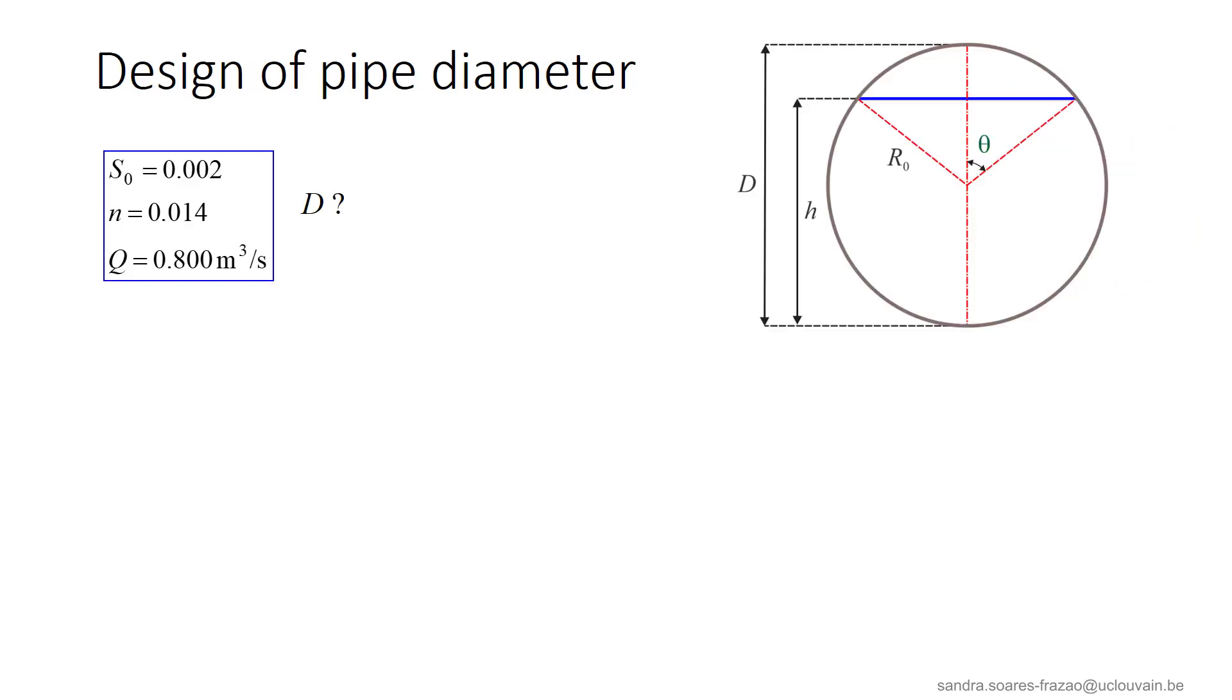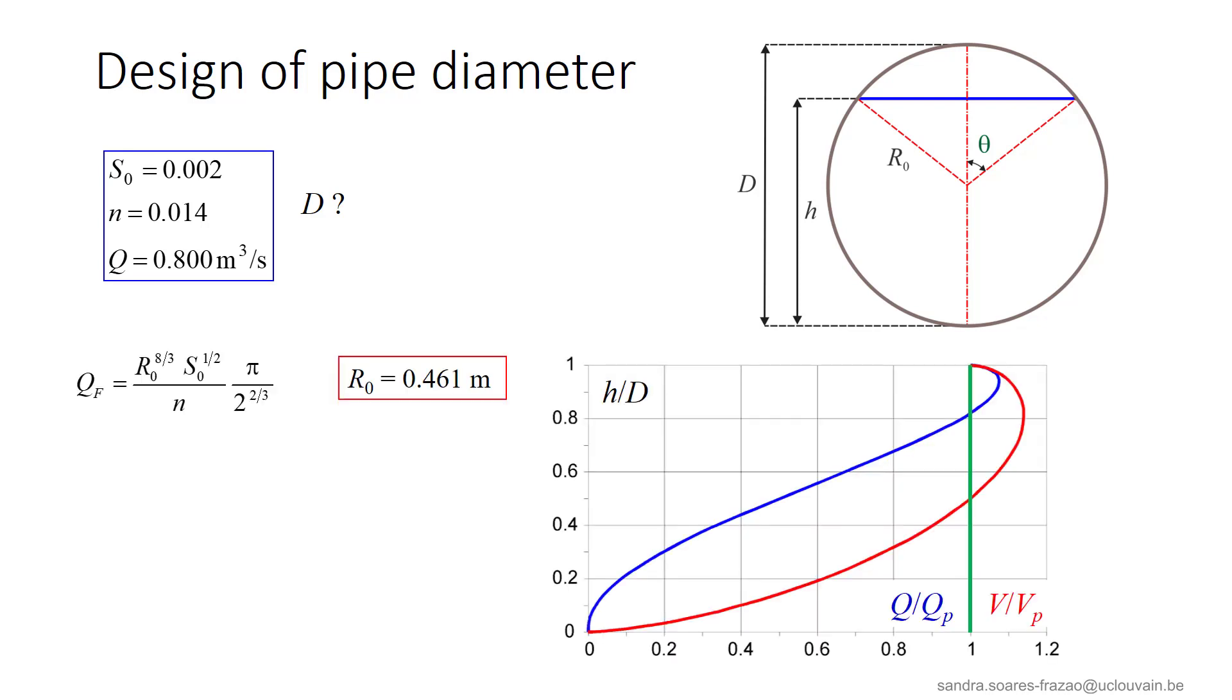Another possible question is the design of the pipe, that is, finding the diameter required for a given discharge. Again, we start with the pipe full discharge equation, that will provide a value of the radius that is on the side of the security, as we know that larger discharges are still possible. So here, we find a radius of 46.1 centimeters.